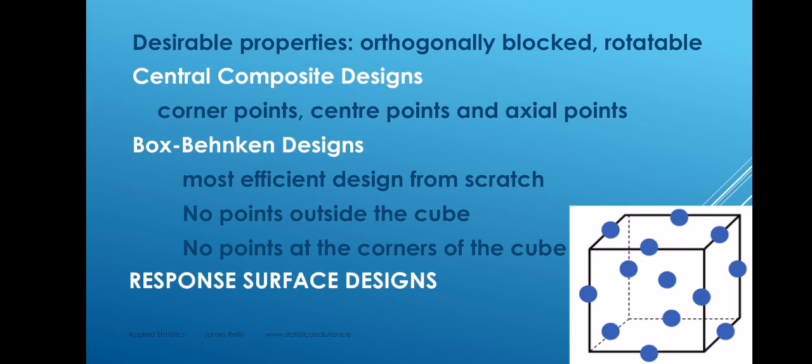Desirable properties for all these designs is that they're orthogonally blocked and rotatable. These are mathematical properties that give rise to good outcomes in terms of the estimates that are made. Now, a second way of identifying a response surface is a central composite design. If you already have a fractional factorial design, you will have corner points and center points. A central composite design just adds axial points, which are like points on the face of the cube in the multidimensional design space or they actually protrude from the face of the cube. And so this can augment an existing design to provide a response surface design.